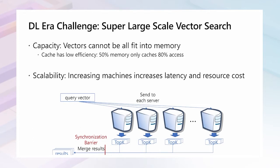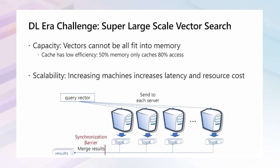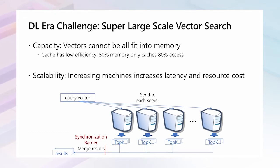The second challenge is the scalability issue. Increasing the number of machines will increase query latency and resource cost, since the search will be done on each machine and the latency will increase due to the increasing number of candidates for aggregation and also the delay of long-tail machines. How to provide better scalability is also a challenge for the vector search system design.